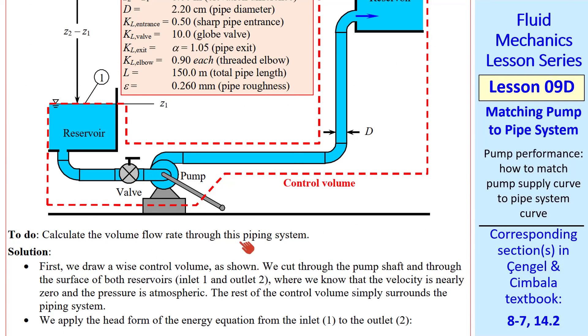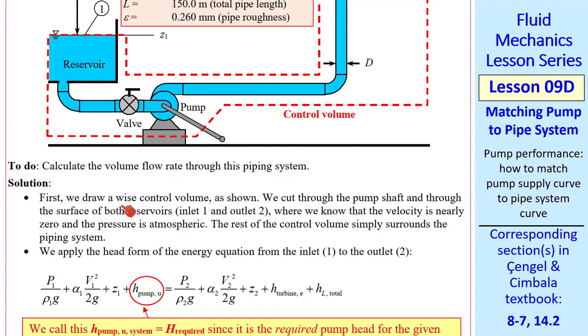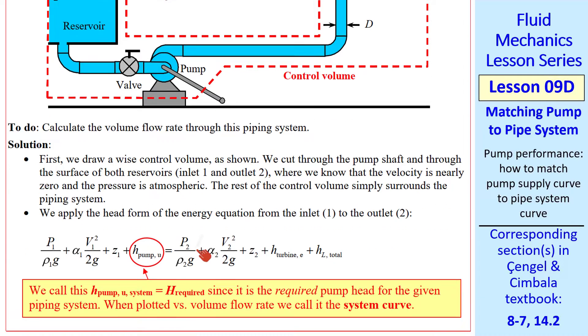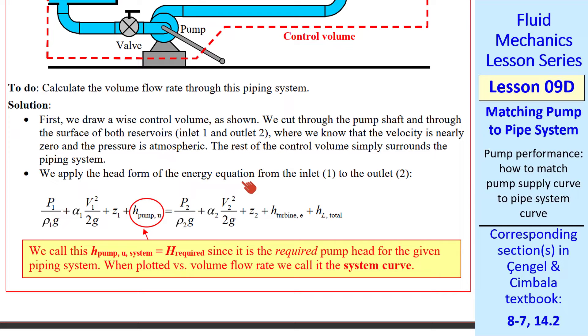We're asked to calculate the volume flow rate through this piping system. I already talked about our wise control volume. And then we apply our workhorse head form of the energy equation, which is shown here. By wise choice of control volume, P1 and P2 are both atmospheric. V1 is approximately zero at the surface of that reservoir, as is V2. There's no turbine in this problem. So we're left with H pump U, elevation difference, and the total irreversible head loss. Since we're doing an equation for the system, this H pump U is H pump U system, which we can also call H required.